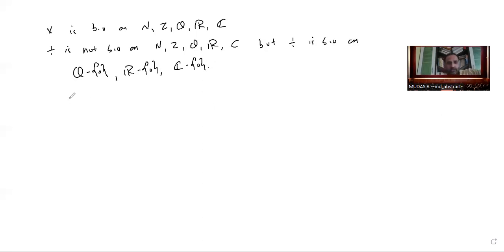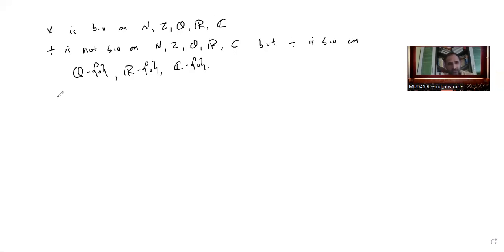By the name 'binary operation', it means two elements are involved simultaneously. If only one element is involved in the operation, that type is called a unary operation. We already encountered these: in 12th class, transpose is a unary operation because only one matrix is used. Involution (inverse) operations are also unary operations because only one element is used.